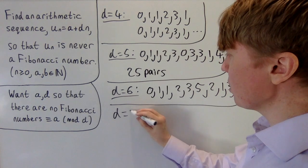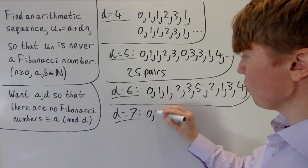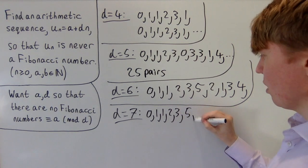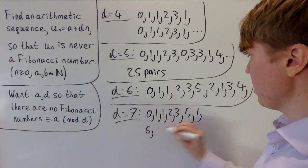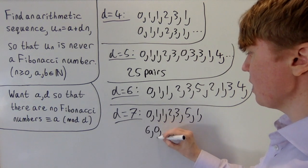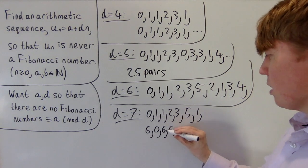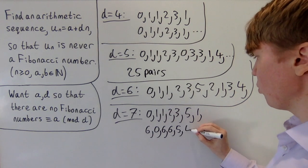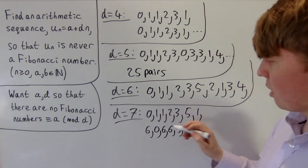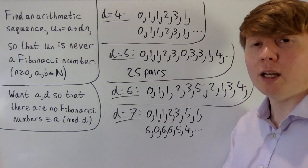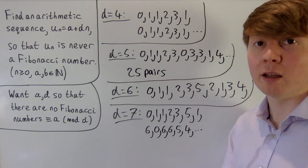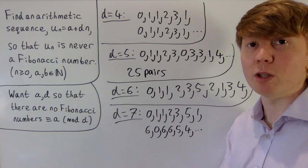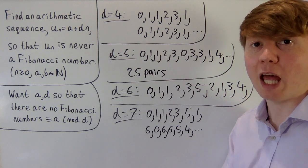For d equals 7, Fibonacci numbers modulo 7: 0, 1, 1, 2, 3, 5, then 8 becomes 1, 5 plus 1 gives 6, 6 plus 1 back to 0, then 6, 6, 6 plus 6 gives 12 which is 5, then 6 plus 5 gives 11 which is 4. All of 0, 1, 2, 3, 4, 5, and 6 appear, so d equals 7 won't work — whatever value of a we take, there will be some overlap with the Fibonacci numbers.